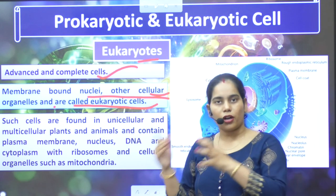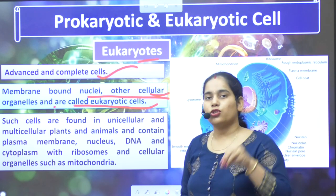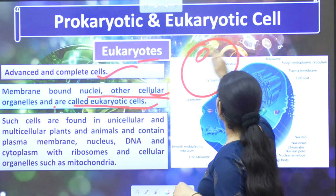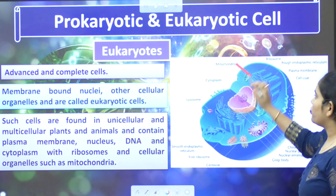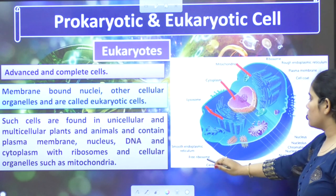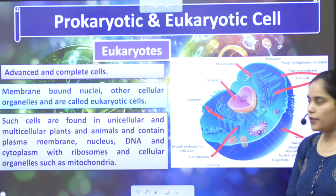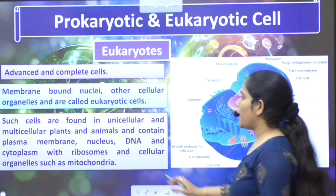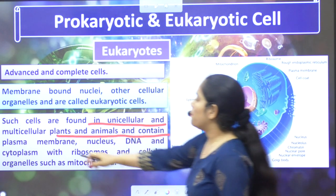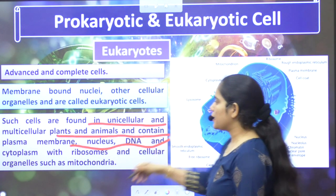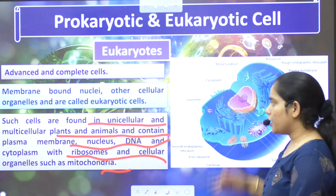Cellular organelles are the small parts inside the cell which are involved in the cell's functioning. Like mitochondria, cytoplasm, lysosome, ribosome, nucleus, cell coat, and plasma membrane — these are all cell organelles, these are small parts. Such cells are found in unicellular and multicellular organisms and contain plasma membrane, nucleus, DNA, cytoplasm with ribosomes, and cellular organelles such as mitochondria.